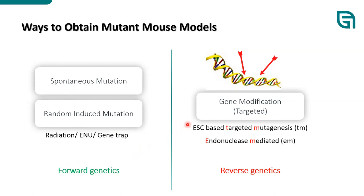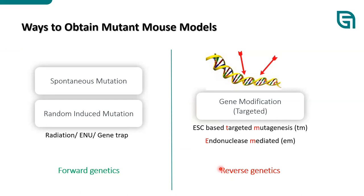In forward genetics, we get the phenotype first and then use positional cloning to identify the causing gene. Later, gene modification and gene targeting strategies — based on embryonic stem cells or engineered endonucleases — allowed us to mutate genes of interest first and then observe the phenotypic consequence. Because this reverses the traditional approach, it is called reverse genetics, and it is now more popular and essential in current biomedical research.